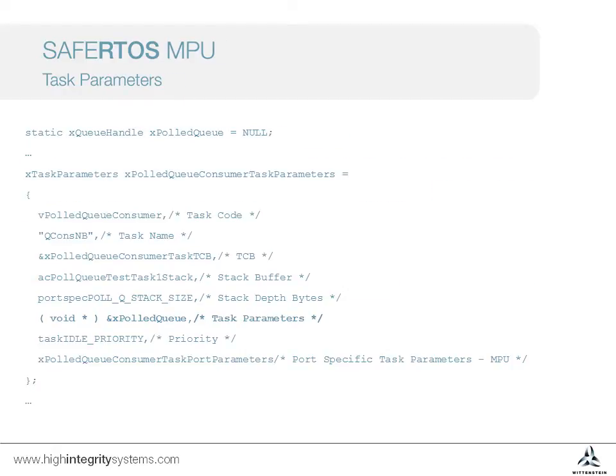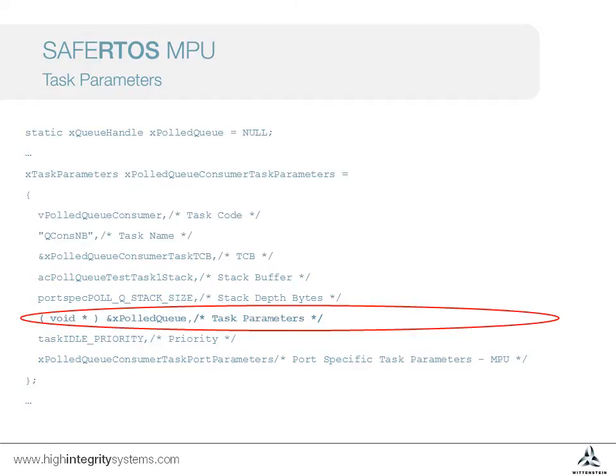This slide shows the task parameters used when a task is created, which we walked through in the introducing tasks video. The key parameter we're interested in here is the field passed to the task function. This is a void type, so it can be used to pass a queue handle or a structure containing many individual elements. In this example, we're simply using it to pass a pointer to the queue handle, xPolledQueue.